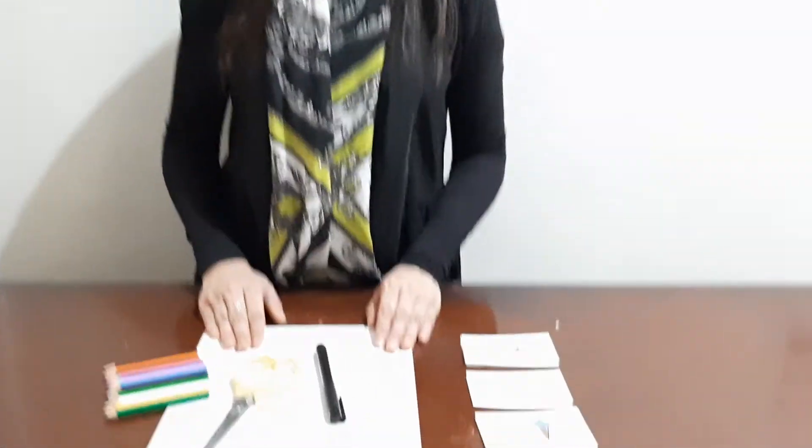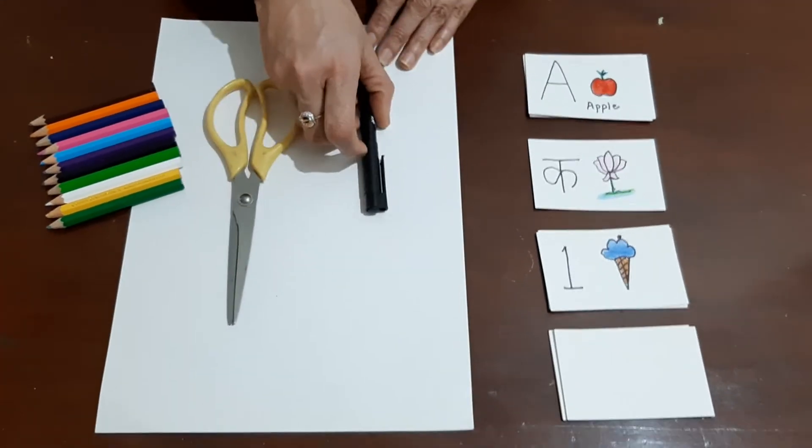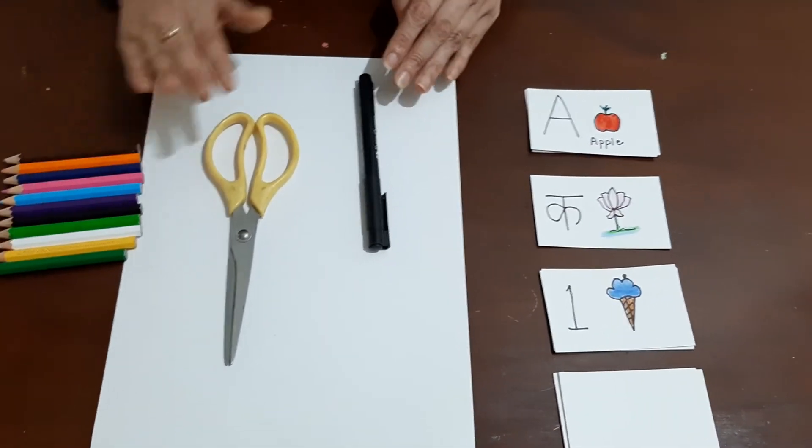For making flashcards, what we need is A4 size sheet of paper, scissors, one black marker and colors.